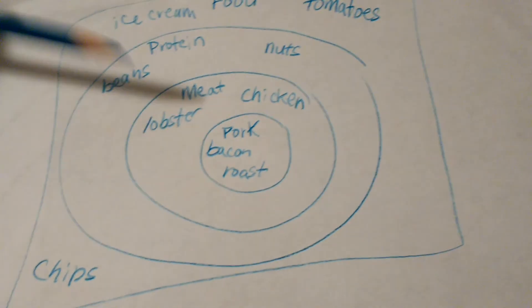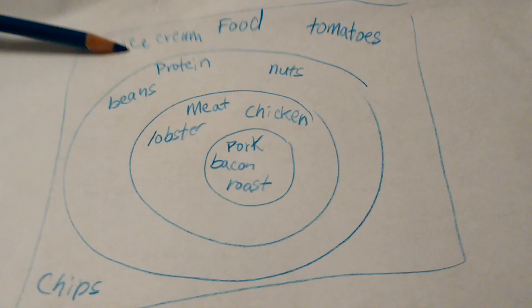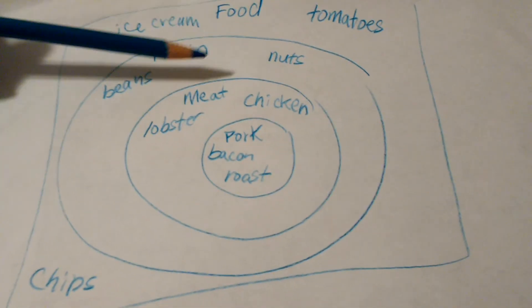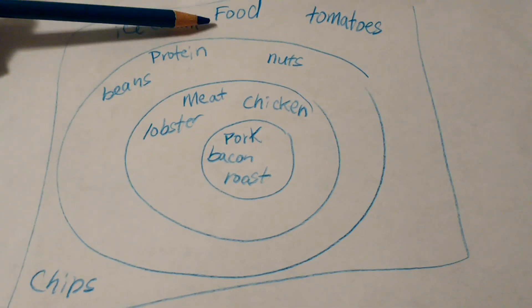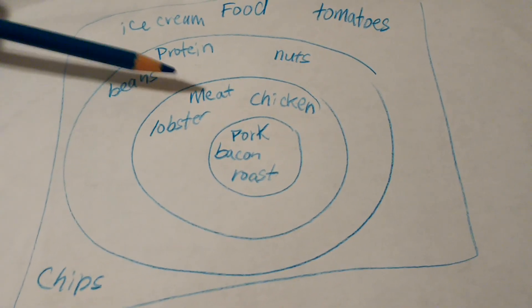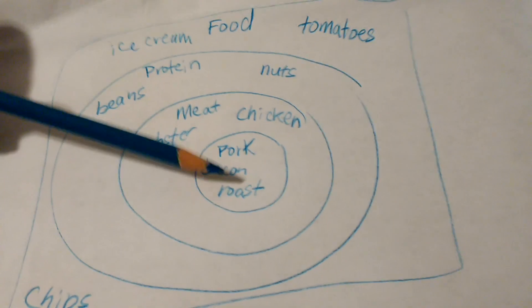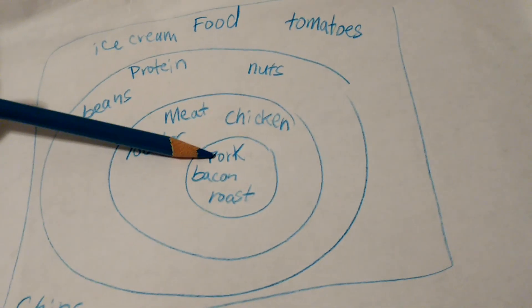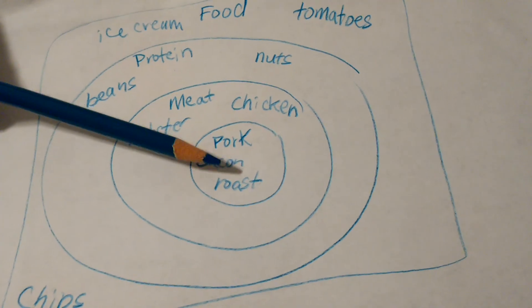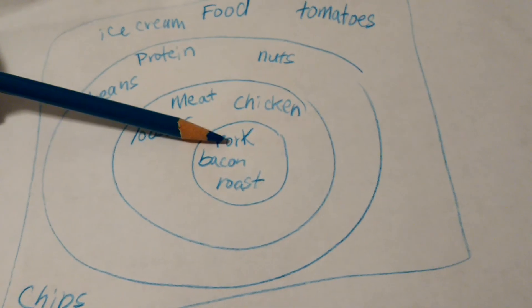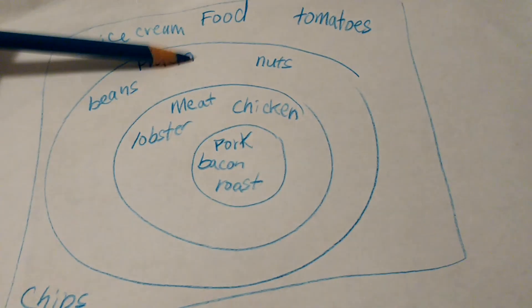Lobster is protein and food. Chicken would be meat, protein, and food. Same thing with lobster, meat, protein, and food. Bacon would be pork, meat, protein, food. Roast pork would be pork, meat, protein, and food.